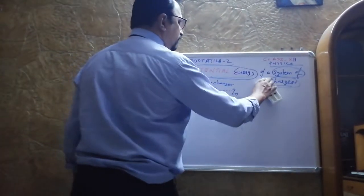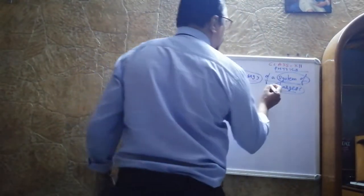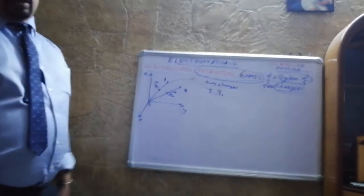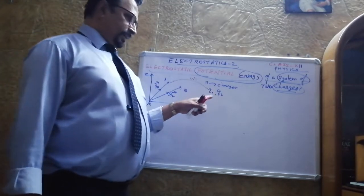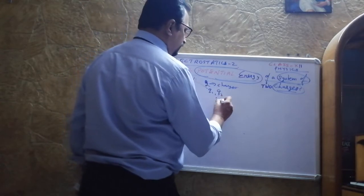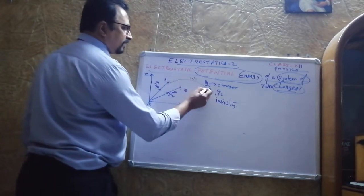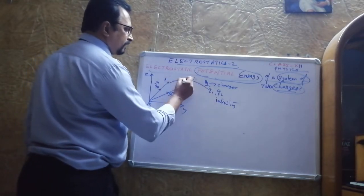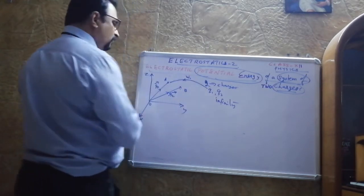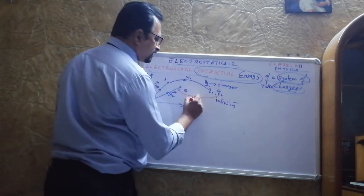Now we are going to derive the expression for this electrostatic potential energy. First we will do it for two charges q₁ and q₂, then for three charges, and by using that we will generalize it. The system consists of two charges; initially we assume both charges are at infinity. First you take q₁ from infinity to A — the work done is W₁. Then you take q₂ from infinity to B — the work done is W₂.